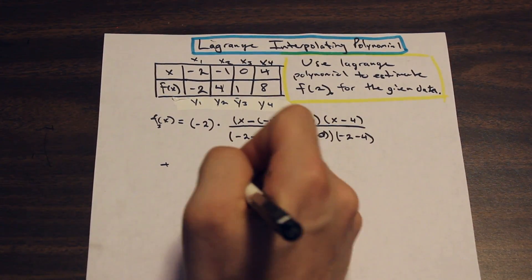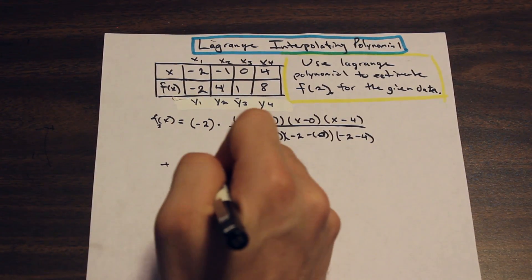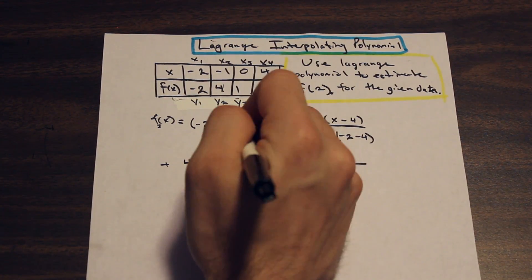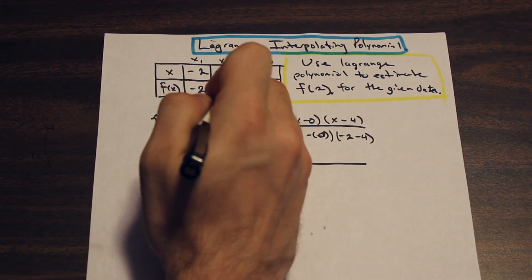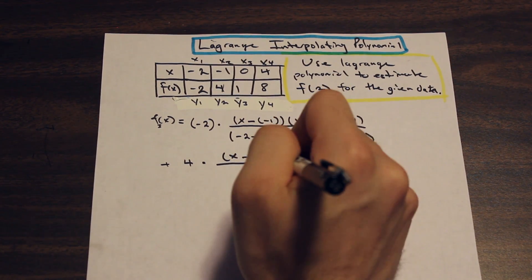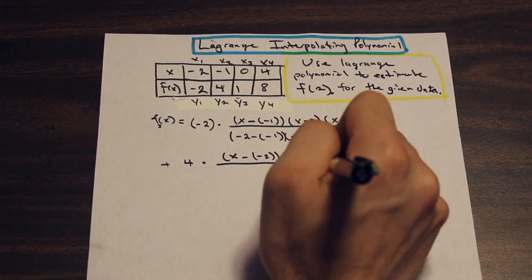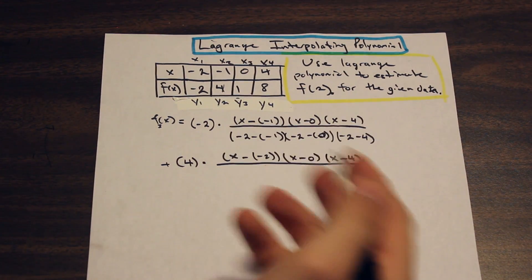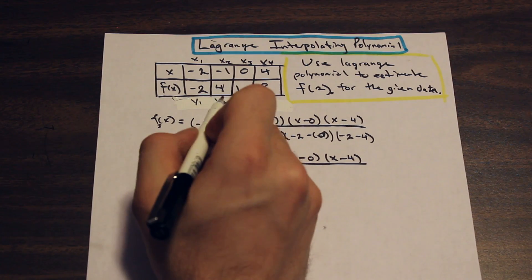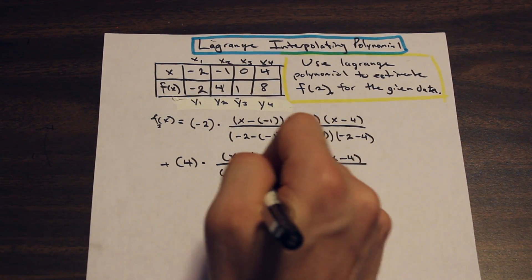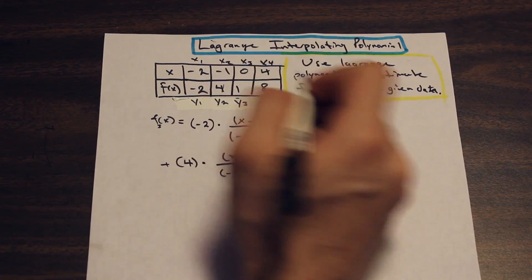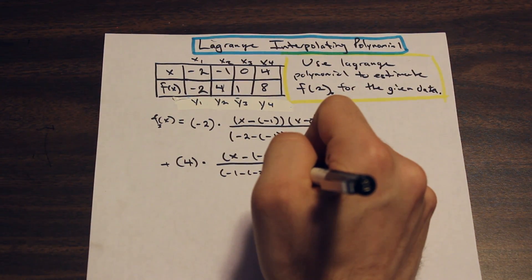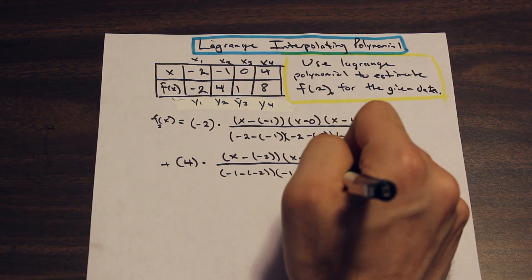For the y2 term: y2 = 4, so we multiply 4 by our fraction. In the numerator, we have our variable x subtracted by every x value that is not x2: so (x − (−2))(x − 0)(x − 4). For the denominator, we use x2 = −1 and subtract all other x values: (−1 − (−2))(−1 − 0)(−1 − 4).